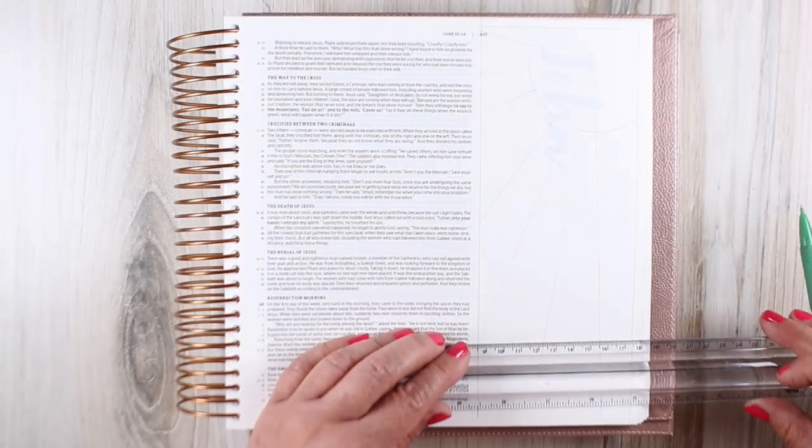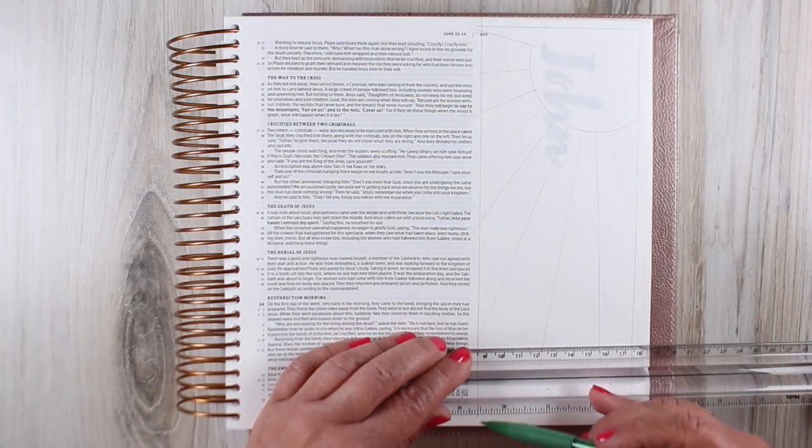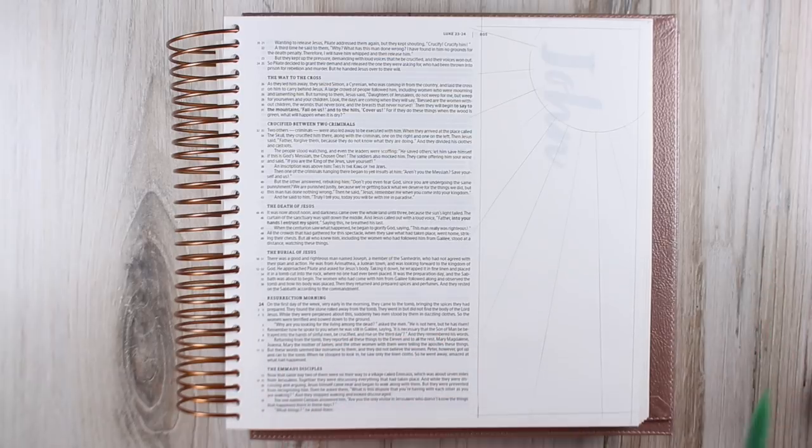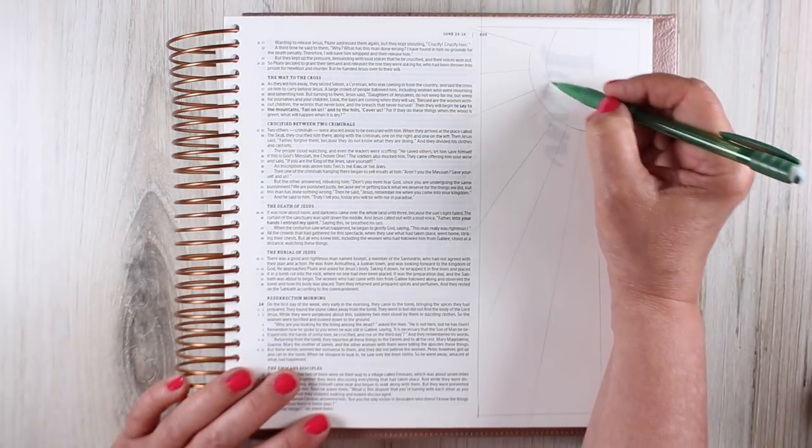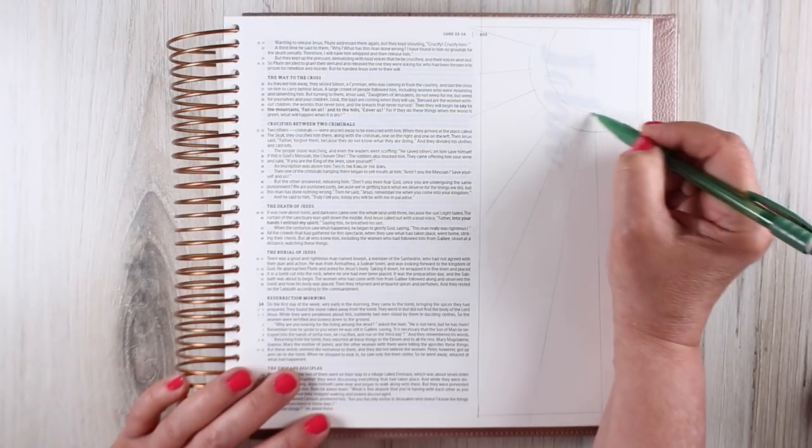I put a line around the outside edge because that's going to be the black border of my stained glass. Your stained glass can go all the way off the edge—you don't have to have that black border. You can make it any size and shape.